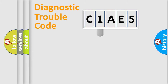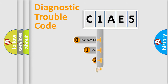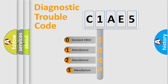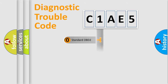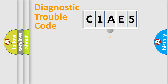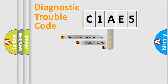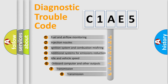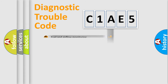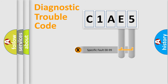This distribution is defined in the first character of the code. If the second character is expressed as zero, it is a standardized error. In the case of numbers 1, 2, or 3, it is a more manufacturer-specific expression of the car-specific error. The third character specifies a subset of errors. This distribution is valid only for the standardized DTC code. Only the last two characters define the specific fault of the group.